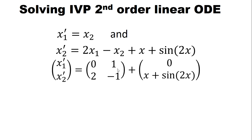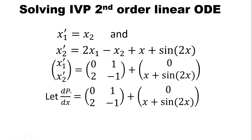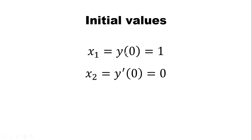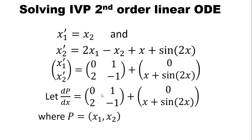We can write this as a vector derivative dP/dX, where P represents the two variables X1 and X2. Since we transformed the equations, we also need respective initial conditions: X1(0) corresponds to Y(0) = 1, and X2(0) corresponds to Y'(0) = 0.